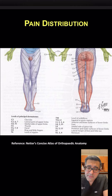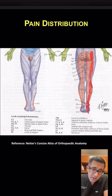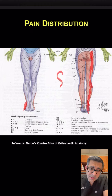And then finally, S1 can also start as pain in the buttock and then more so pain in the posterior part of the thigh, posterior part of the calf, going towards the bottom of the foot, but also towards the outer aspect of the foot.